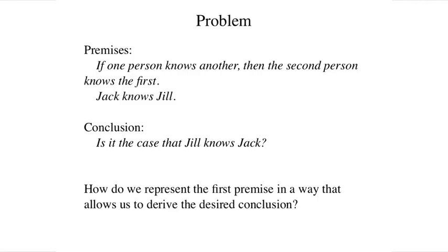Unfortunately, when we want to say things more generally, we find that propositional logic is inadequate. Suppose, for example, we wanted to say that in general, if one person knows a second person, then the second person knows the first. And suppose, as before, that we believed that Jack knows Jill. How do we express our general fact in a way that allows us to conclude that Jill knows Jack? Propositional logic is inadequate — it gives us no easy way of encoding this more general belief in a form that captures its full meaning and allows us to derive such conclusions.